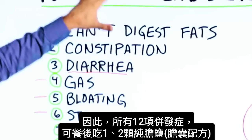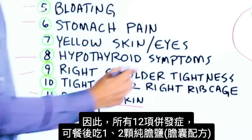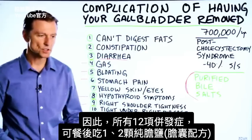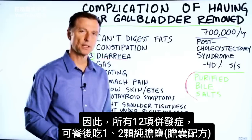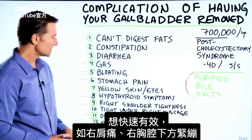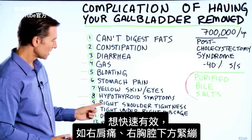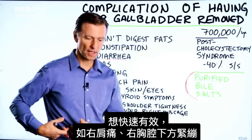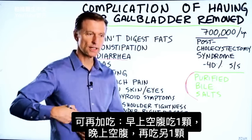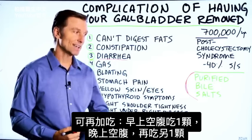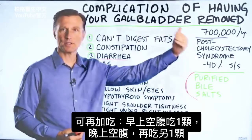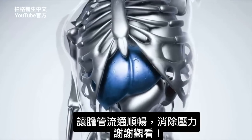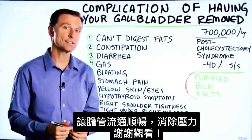So for all of these complications, the solution is purified bile salts. You can take one or two after a meal. If you want to see some quick results — like for right shoulder pain or tightness underneath the right rib cage — you can take one on an empty stomach and another one on an empty stomach later in the day. That will give your liver a chance to drain properly and get rid of that sensation.